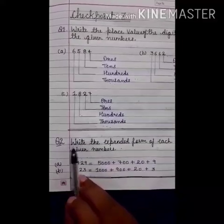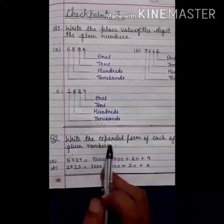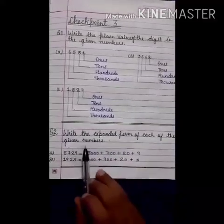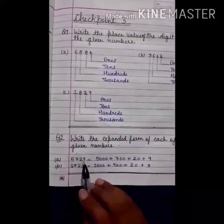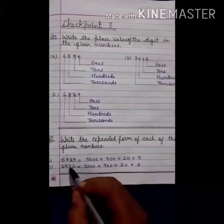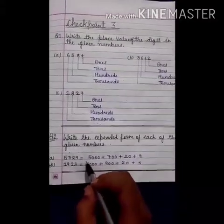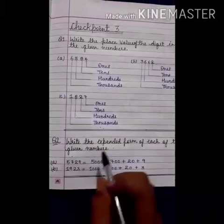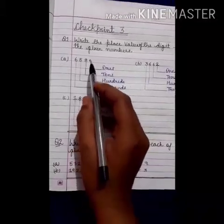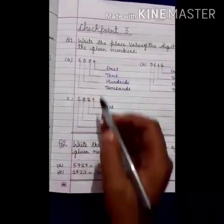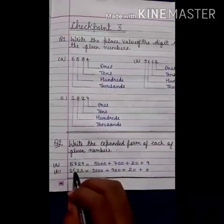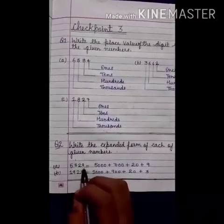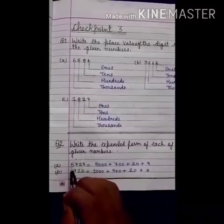Now 2nd question: write the expanded form of each of the given numbers. Whenever we write the expanded form, we always start from the first number. In the place value we always start from the last number, but in the expanded form we always start from the first number. So 1's, 10's, 100's and 1000's.